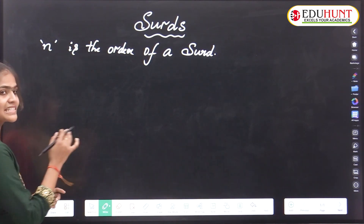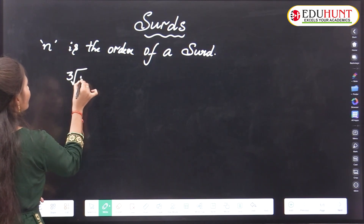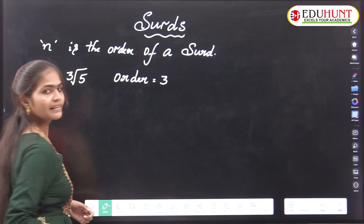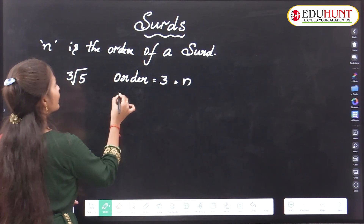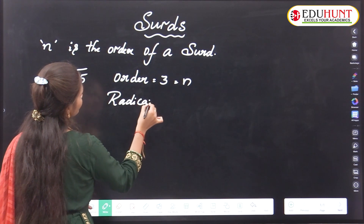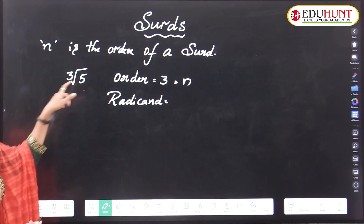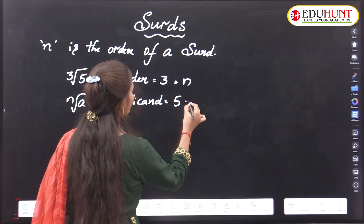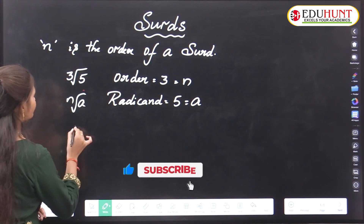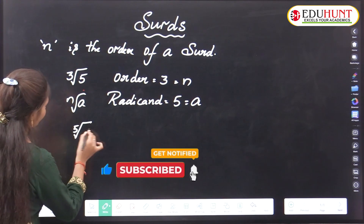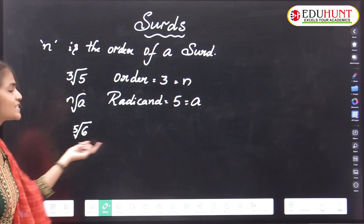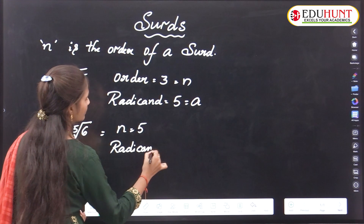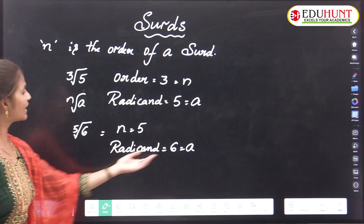In general, n is the order of a surd. For example, for cube root of 5, the order is 3, which means n equals 3, and the radicand a equals 5. For another example, fifth root of 6: here n equals 5 and the radicand a equals 6.